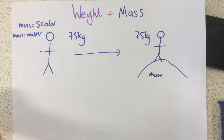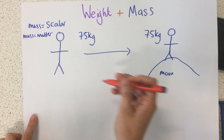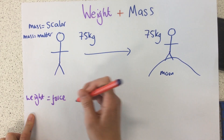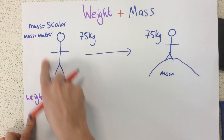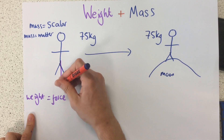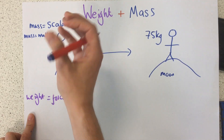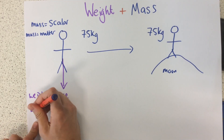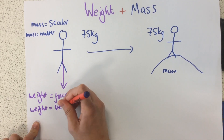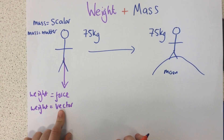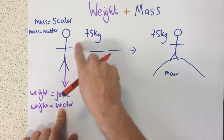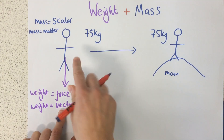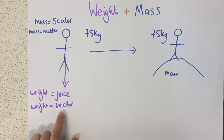So what exactly is weight? Weight is different — weight is a force. Because this person on earth has a mass of 75 kilograms, but their weight requires us to factor in the gravitational field strength, the gravitational pull of the earth pulling them down. As a result, weight is a vector quantity — it has both size and direction, because it's the mass and the direction of gravity pulling them down. It's the effect of gravitational field strength acting on this person's mass.